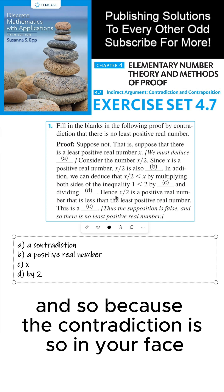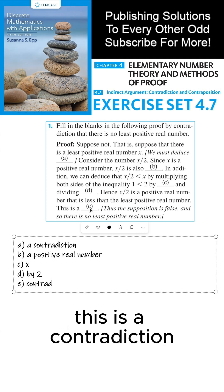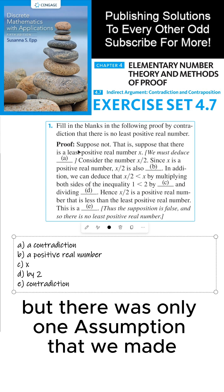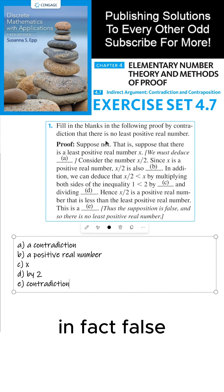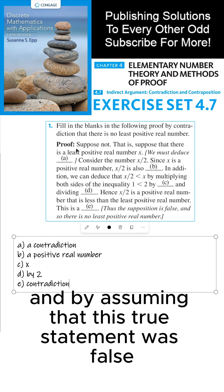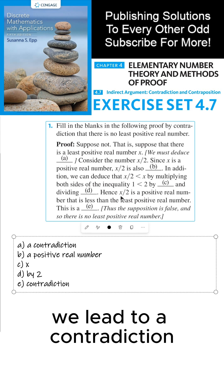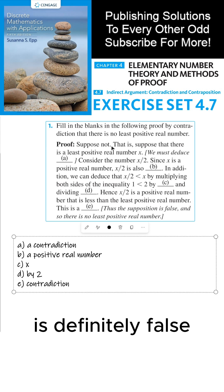This is where we tell the reader what the contradiction is blatantly: we have a positive real number that is less than the least positive real number. The contradiction is that a least positive real number should be the smallest positive real number, yet here we have another positive real number that is smaller than the smallest positive real number. That's not possible. Because the contradiction is so in your face, we must have done something wrong. This is a contradiction, which means we assumed something that was false.